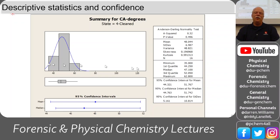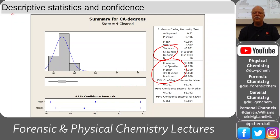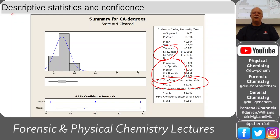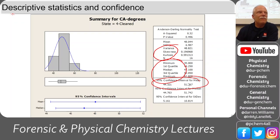In the coming weeks we'll discuss other figures of merit: skewness, kurtosis, different quartiles, outlier detection, and 95% confidence intervals. Any questions? Have a great day.